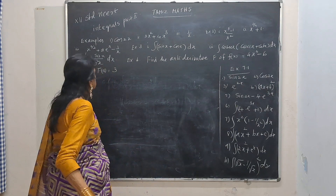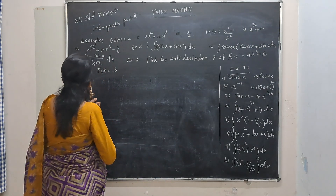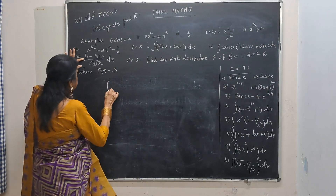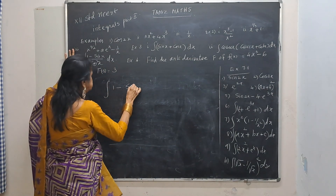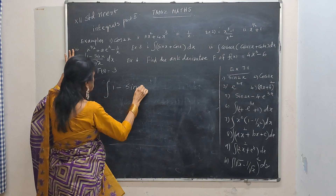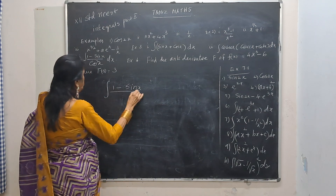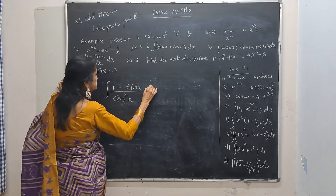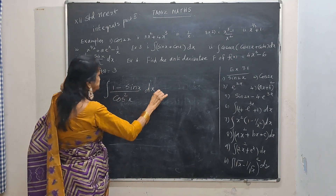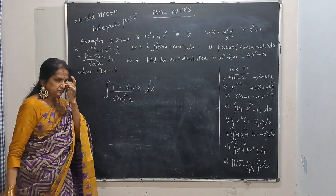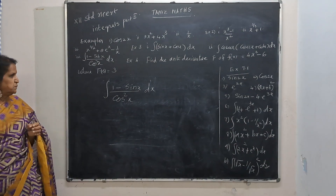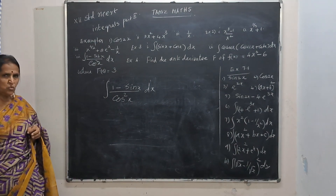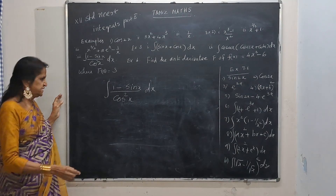Next one: integrate 1 minus sin x by cos squared x dx.